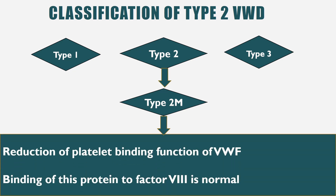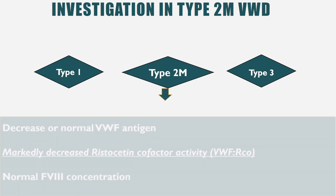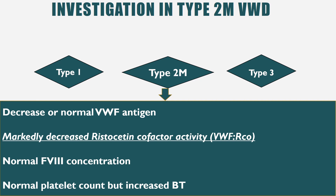In type 2m, there is a reduction of platelet binding function of vWF — the opposite of type 2b, where platelet binding is increased. The binding of vWF to factor VIII remains normal in type 2m. On investigation, you find either decreased or normal vWF antigen level, markedly decreased ristocetin cofactor activity, normal factor VIII concentration, and normal platelet count, but bleeding time is increased.